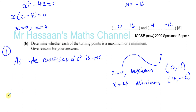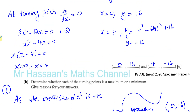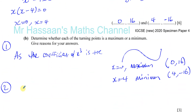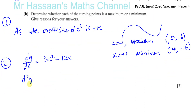Another way is to find the second differential, which tells you the rate of change of the gradient. We know dy/dx equals 3x squared minus 12x. Differentiating again: multiply by the power to get 6x, and the minus 12x term becomes minus 12 — because 1 times 12 gives 12, then x to the power of zero equals one, so just 12. So d²y/dx² equals 6x minus 12.